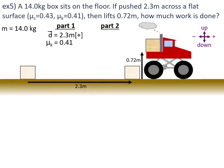We're told the box is lifted 0.72 metres into the back of the truck — that has to do with part two. For our calculations, we can calculate the work of friction in part one, which is F_k multiplied by d. We substitute μ_k·mg·cos θ for F_k.